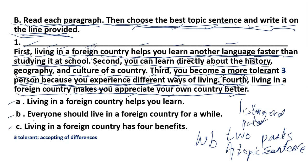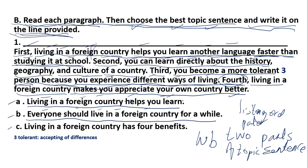Let's choose which one is the best topic sentence. Options include: 'Living in a foreign country helps you learn,' 'Everyone should live in a foreign country for a while,' 'Every person needs to live in a foreign country for a while,' and 'Living in a foreign country has four benefits.' I think the correct answer is 'Living in a foreign country has four benefits.'